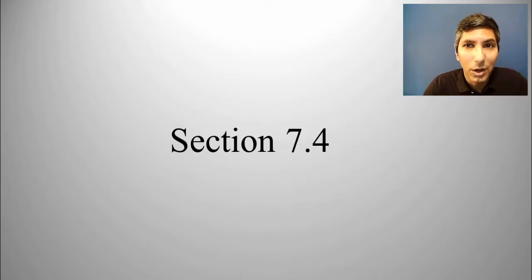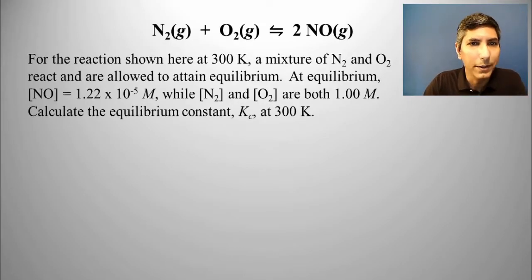In Section 4, we're going to be learning about how to calculate an equilibrium constant. We just barely touched on that in the last section, but we'll try another example with this. Here's another reaction. For the reaction shown here at 300 kelvins, a mixture of N2 and O2 react and are allowed to attain equilibrium.